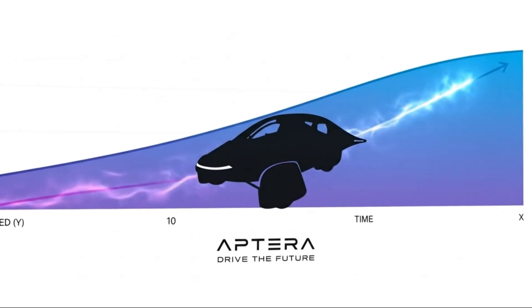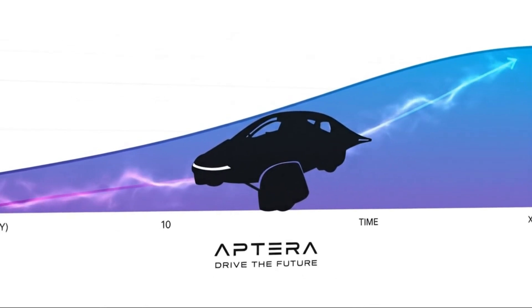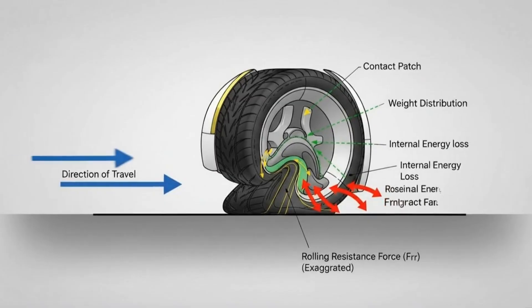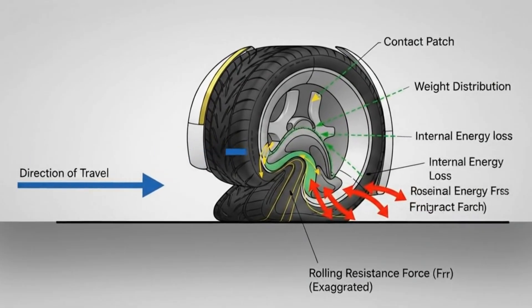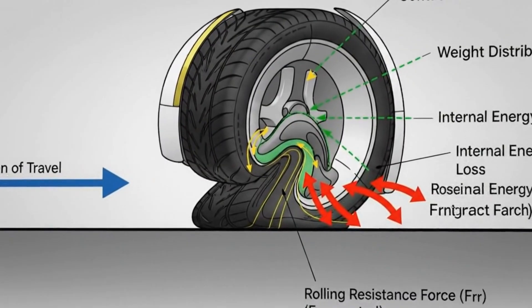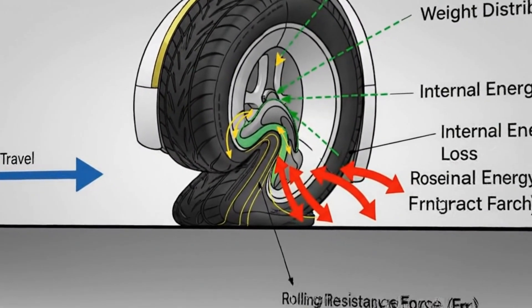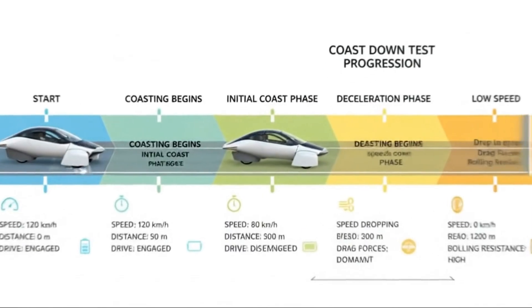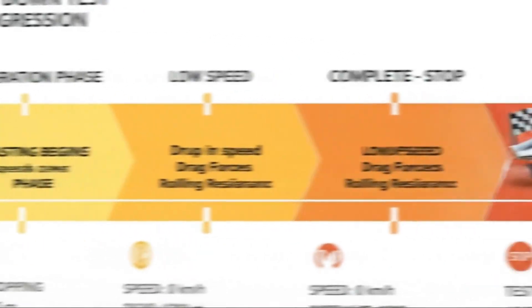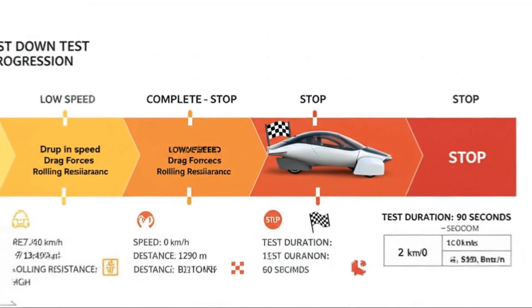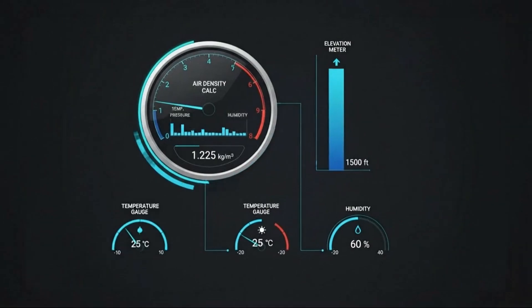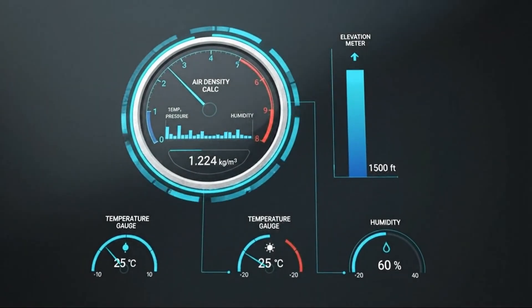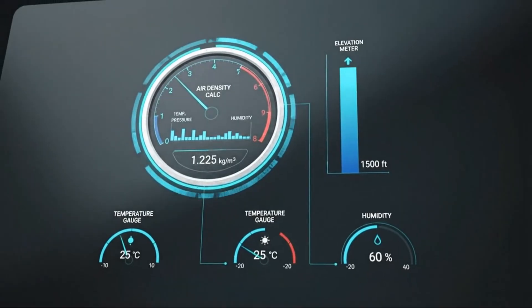But efficiency isn't just about slicing through air, it's about moving as little mass as possible. Aptera's lightweight construction plays a massive role in extending range. Depending on battery size, the vehicle weighs roughly between 1,800 and 2,200 pounds. That's nearly half the weight of many electric cars on the road today. Less mass means less energy needed to accelerate, less rolling resistance, and lower energy demands across the board.